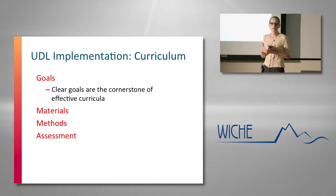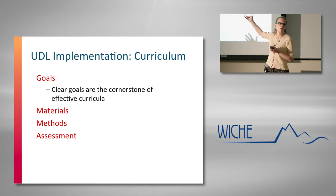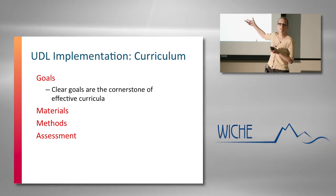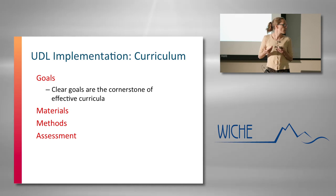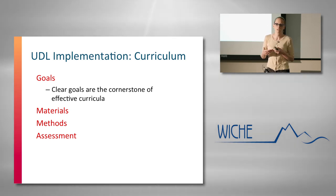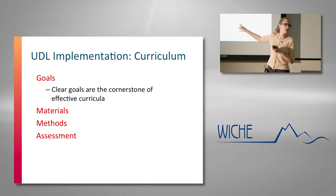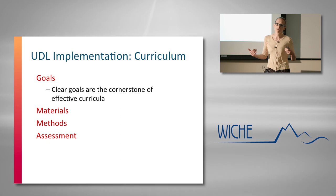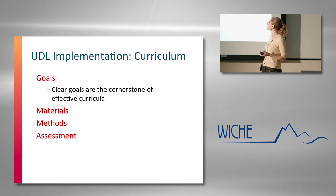There's also the area of materials — what materials will help students reach those goals, including technology selection. Then the methods of teaching and learning we'll support students with. And finally, how do we assess what they know, and use that assessment to evaluate ourselves as instructors and whether we've addressed variability well enough? Those are the four components of curricula: goals, materials, methods, and assessment.